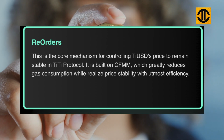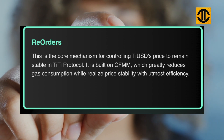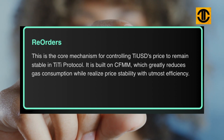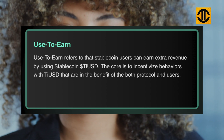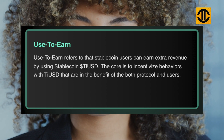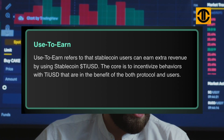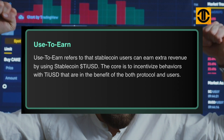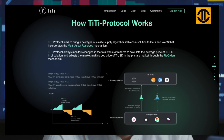The mechanism for controlling T-USD's price stability in TT Protocol is built on CFMM, which greatly reduces gas consumption while achieving price stability with utmost efficiency. 'Use-to-earn' refers to stable coin users being able to earn extra revenue by using stable coin dollar T-USD. The core is to incentivize behaviors with T-USD that benefit both the protocol and users. TT Protocol aims to bring a new type of elastic supply algorithmic stablecoin solution to DeFi and Web3.